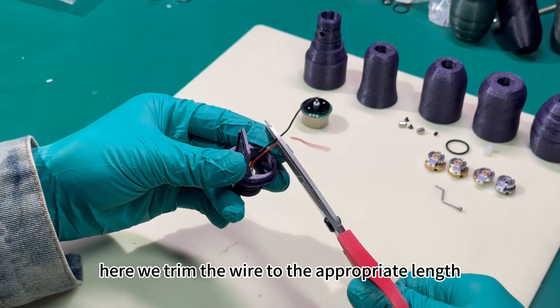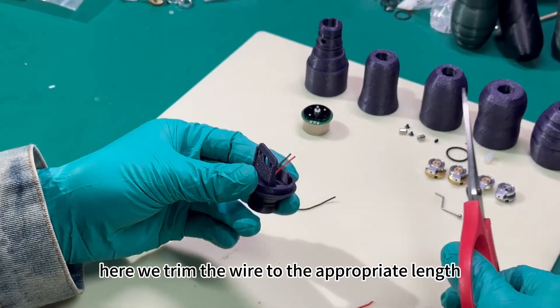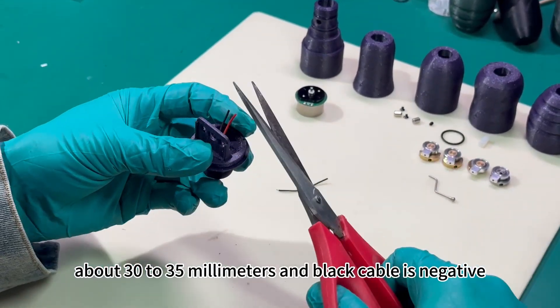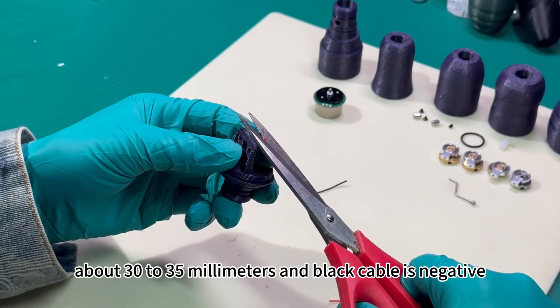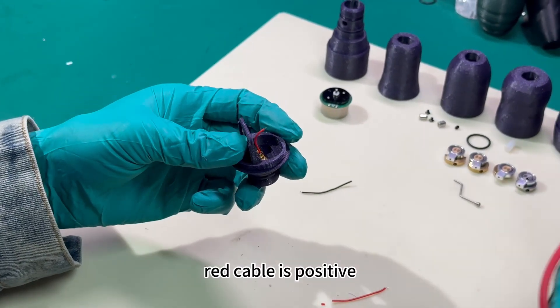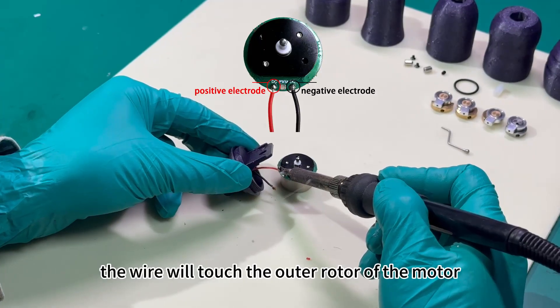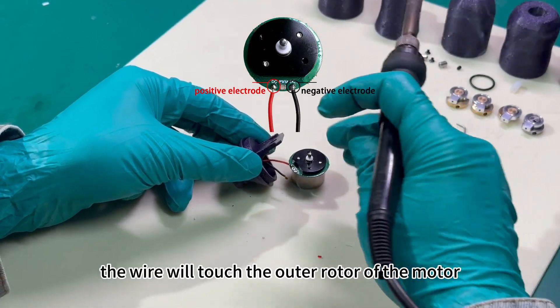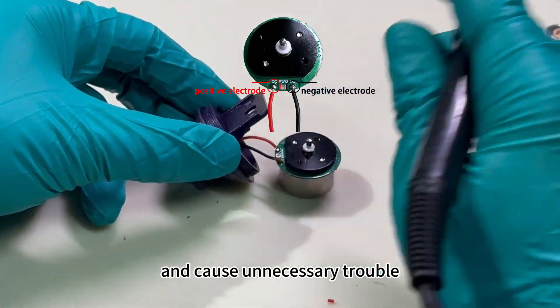Here we trim the wire to the appropriate length, about 30 to 35 millimeters. Black cable is negative, red cable is positive. If the wire is too long it will touch the outer rotor of the motor and cause unnecessary trouble.